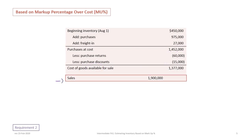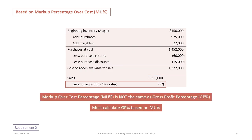The next step is to determine what our sales were — $1,900,000. But this time, where in the previous example we deducted our gross profit and knew what it was, in this case we still have to deduct gross profit, but the problem is we don't know what it is. This problem does not give us the gross profit percentage — it gives us the markup percentage. Markup over cost, or MU percentage, is not the same as the gross profit percentage, so we must calculate the gross profit percentage from the markup percentage to complete our estimation of ending inventory.